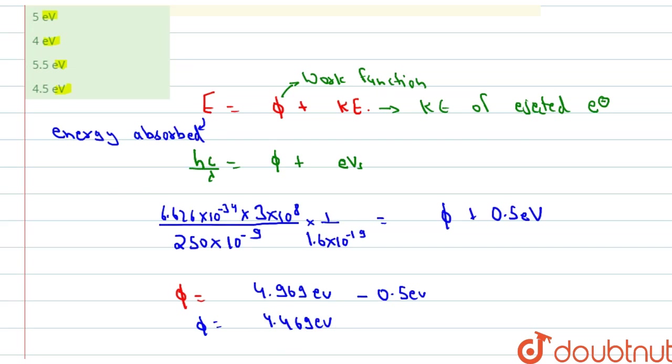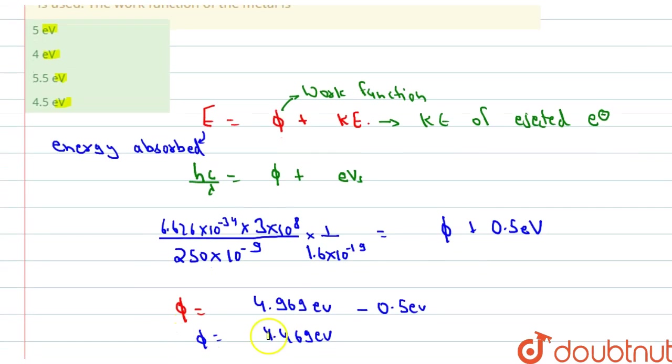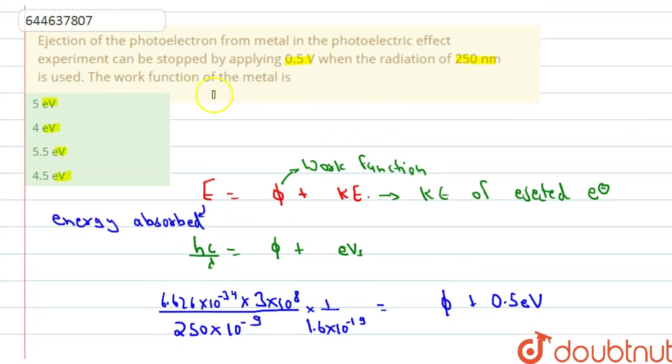So we can say this is approximately equals to 4.5 electron volt. So the work function Phi is equals to 4.5 electron volt. As we can see here, the appropriate answer will be 4.5 electron volt, option number D. This is our correct answer. Thank you watching. Best of luck and bye-bye.